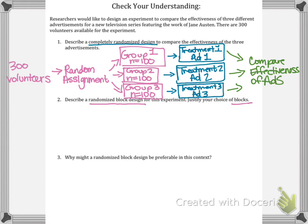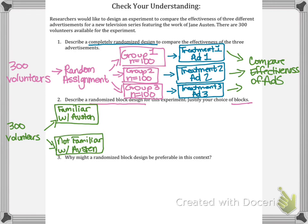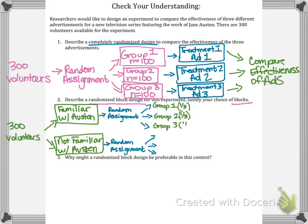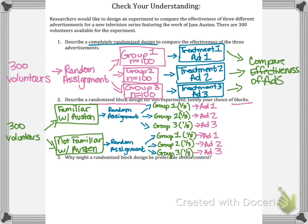For the randomized block design, we need to think about what characteristic might affect how someone views these advertisements. Familiarity with Jane Austen is a good block — break the 300 volunteers into those familiar with Jane Austen's works and those not familiar. From there, randomly assign each block into three treatment groups of one-third each. Each subgroup receives ad one, two, or three, then compare effectiveness within each block and between the two blocks.